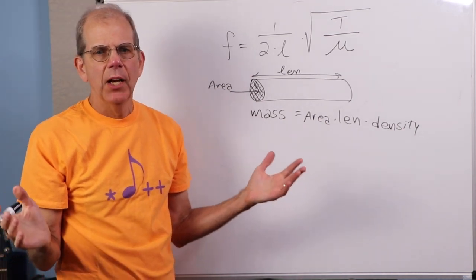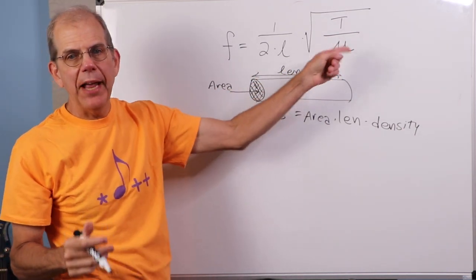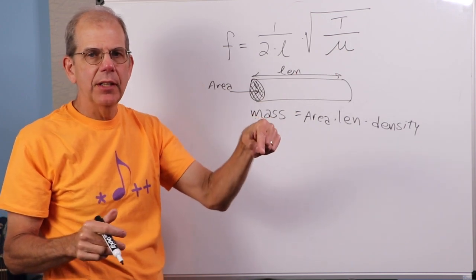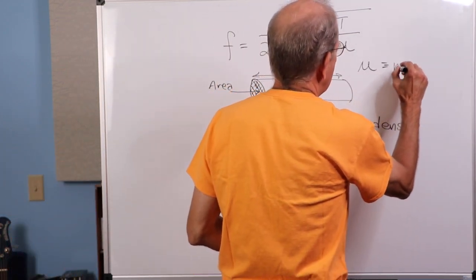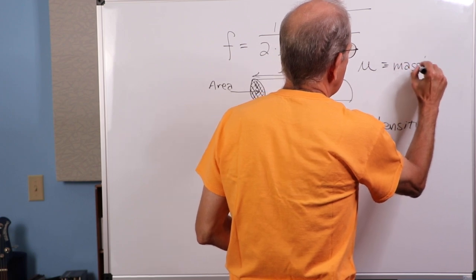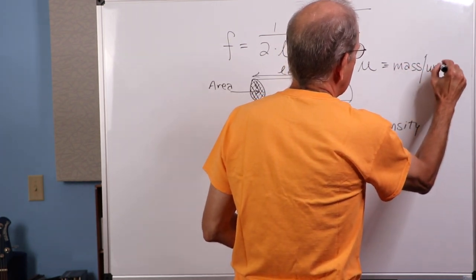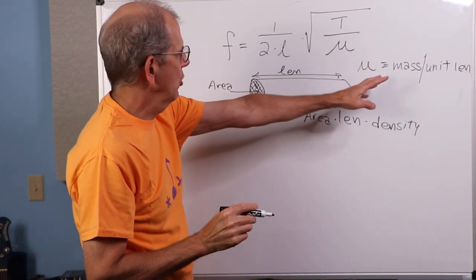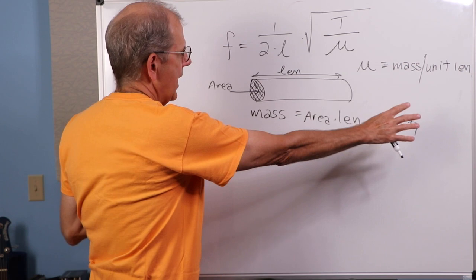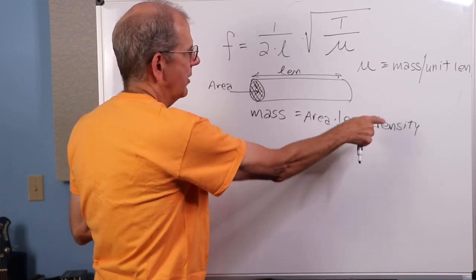And it comes down, basically, that mass per unit length is essentially approximated by the diameter of the string. We can think of just having a constant in there to correct for it, assuming the strings are all made out of the same material.